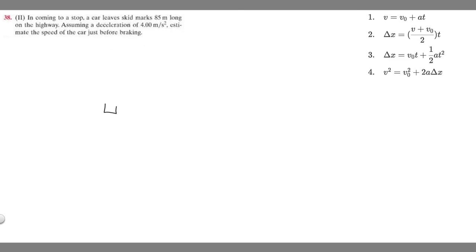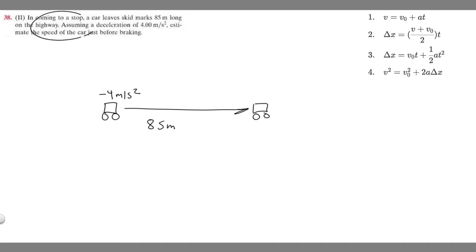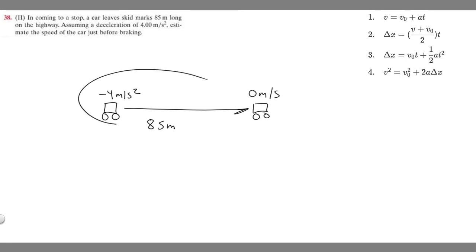Let's visualize this: we have a car on a highway that comes to a stop, leaving skid marks 85 meters long. At the point where braking begins, it starts decelerating at negative four meters per second squared. At the end of the skid marks, the car has come to a full stop, so its final velocity is zero meters per second.